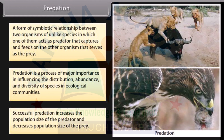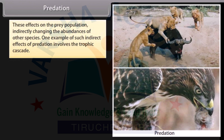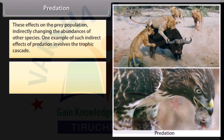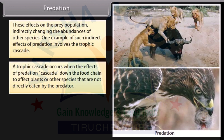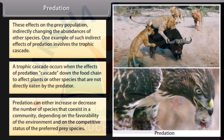Successful predation increases the population size of the predator and decreases the population size of the prey. These effects on the prey population indirectly change the abundances of other species — one example involves the trophic cascade. A trophic cascade occurs when the effects of predation cascade down the food chain to affect plants or other species not directly eaten by the predator. Predation can either increase or decrease the number of species that coexist in a community depending on the favorability of the environment and the competitive status of the preferred prey species.